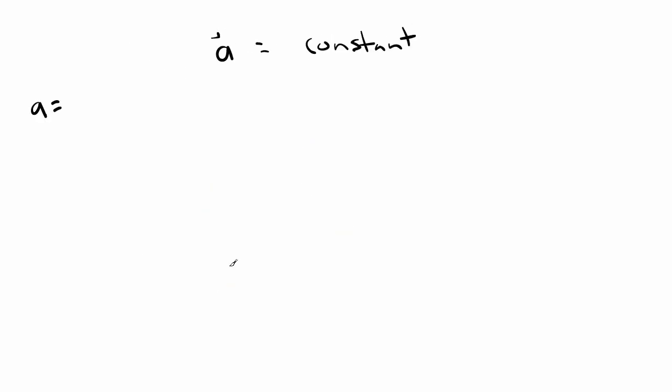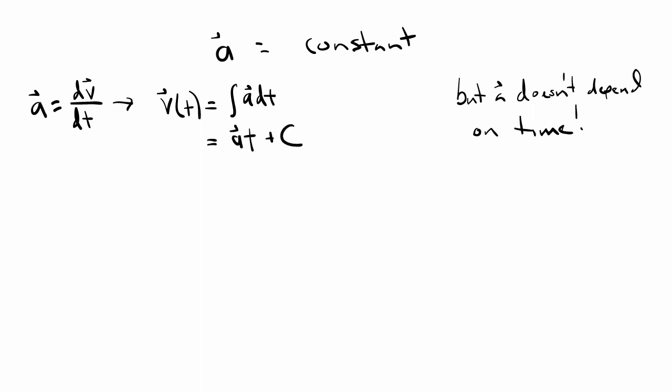Remember the acceleration doesn't depend on time, it's just a constant. So if I integrate it, I get the acceleration times time plus an integration constant. Well, the constant has to have the units of velocity to be consistent, so we can call it v-naught, or the initial velocity.